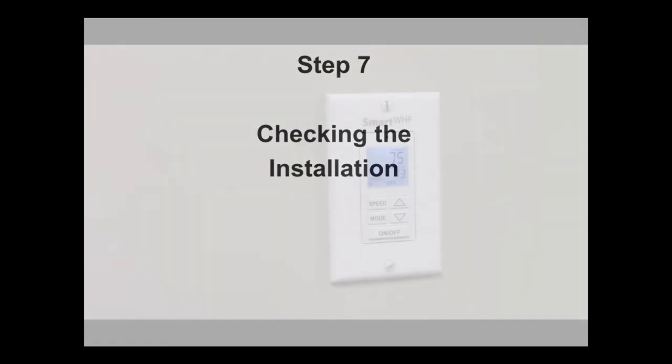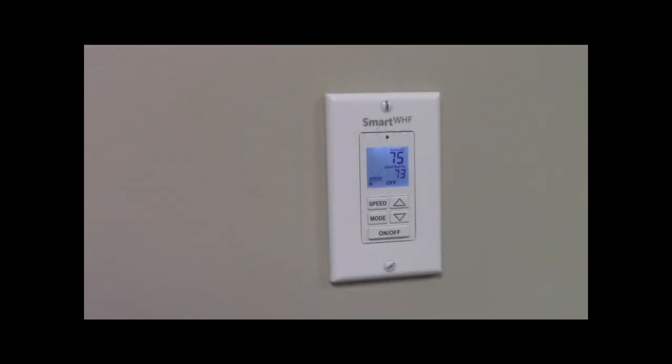Step 7 is checking the installation. Right now the WTT is in temperature control. We'll change to timer control to check the installation by pressing the mode key and pressing the up key.